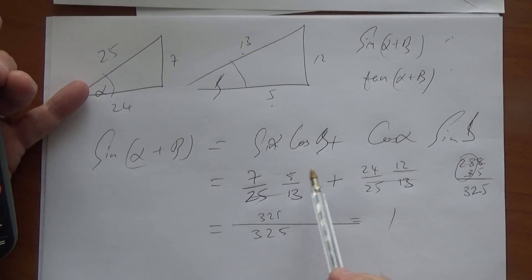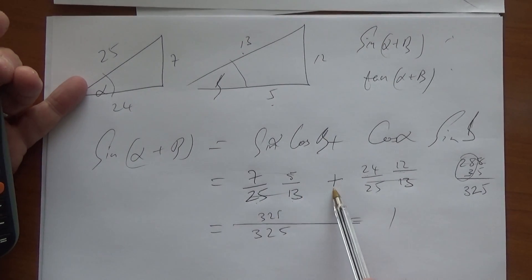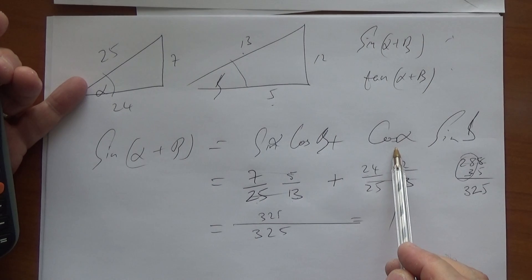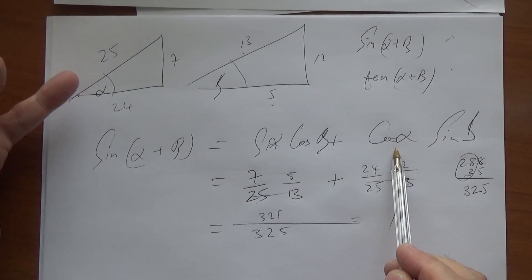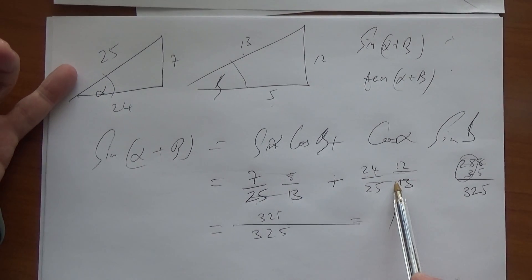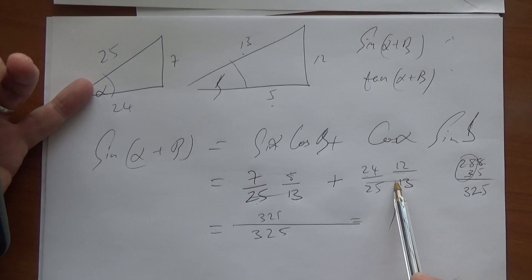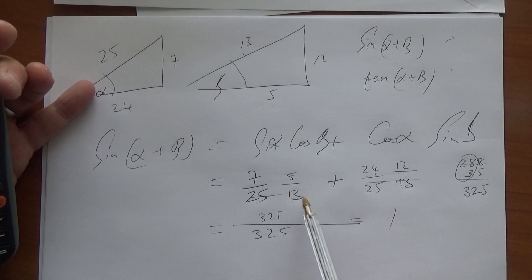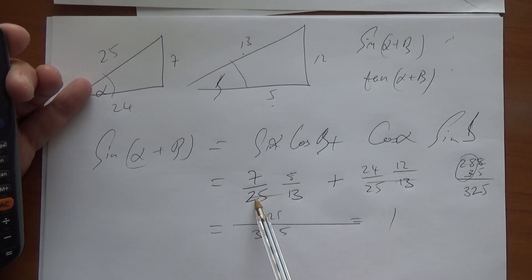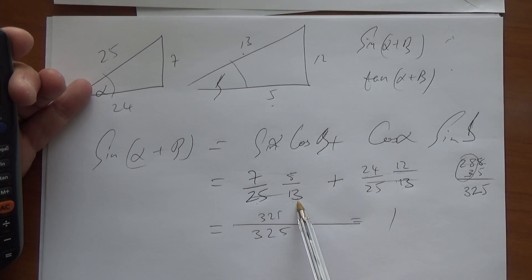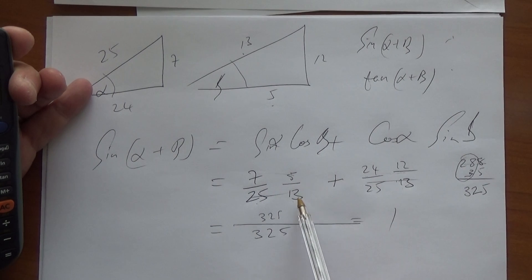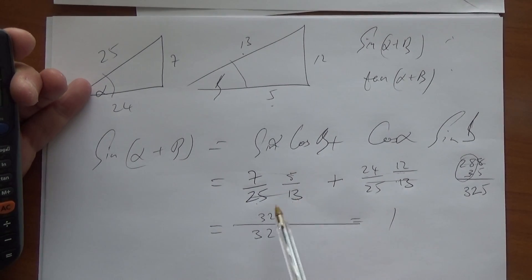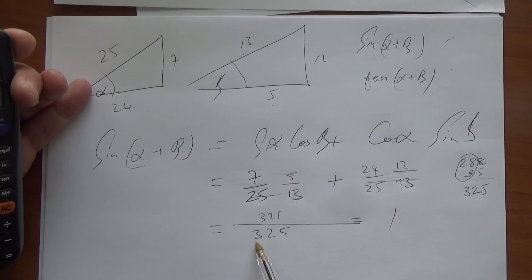7 over 25. Cos of this is 5 over 13. Plus the cos. So hold on. The cos of alpha is 24 over 25, and the sine of beta is 12 over 13. Okay, let's be careful here. 12 times 25 is 300. And 1 times 25 is 25. So that's 325.